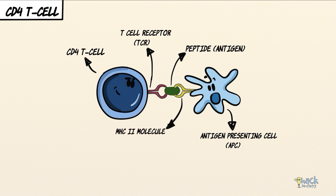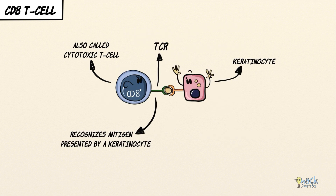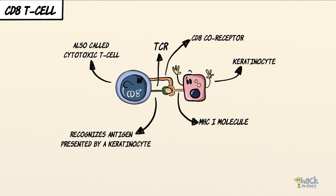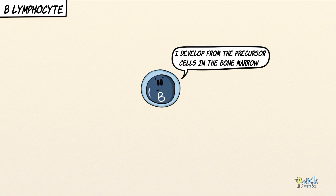An antigen presenting cell, for example a Langerhans cell, presents an antigen to T cells via the MHC2 molecule. Correspondingly, only a T cell with a CD4 coreceptor can recognize an antigen via the MHC2 molecule. Similarly, a nucleated cell such as a keratinocyte presents an antigen to T cells via the MHC1 molecule, and only a T cell with a CD8 receptor can recognize an antigen via the MHC1 molecule.